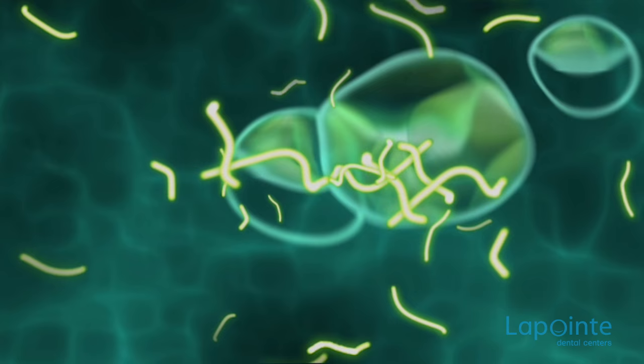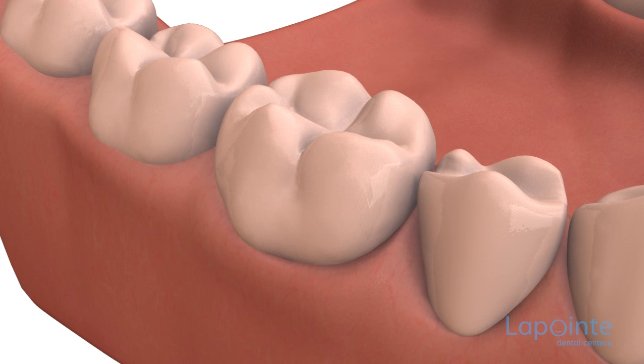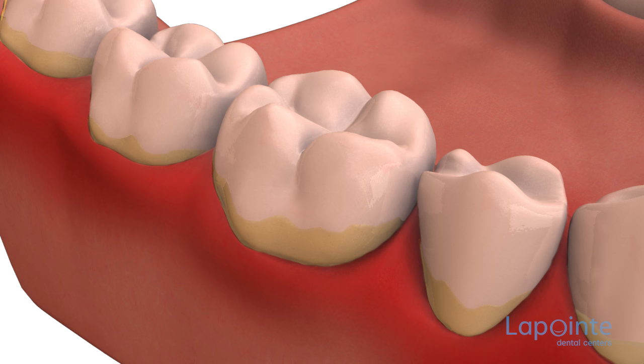Dental plaque is a well-structured film that forms over a period of 24 hours. It consists of numerous bacterial colonies. The formation of plaque takes place in five steps. Once these are completed, this coating hardens while accumulating bacteria, making it more and more harmful to the surrounding tissues to which it adheres easily.